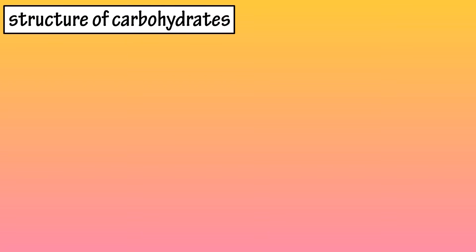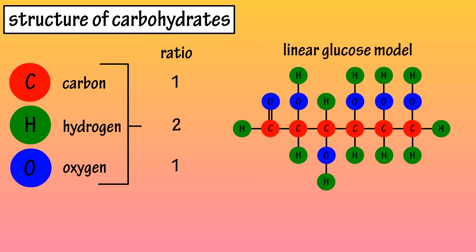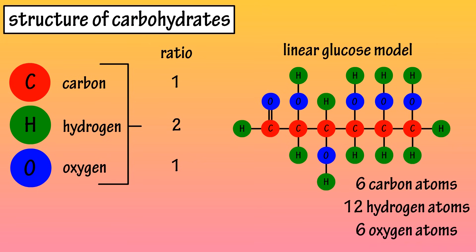The structure of carbohydrates. All carbohydrates contain carbon, hydrogen, and oxygen, usually in a ratio of 1 to 2 to 1, as you can see here in this linear model of a glucose molecule, which has 6 carbon atoms, 12 hydrogen atoms, and 6 oxygen atoms.